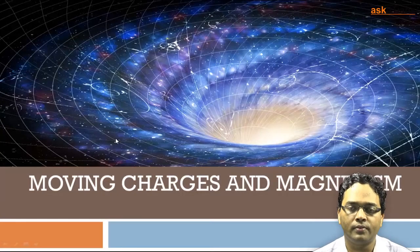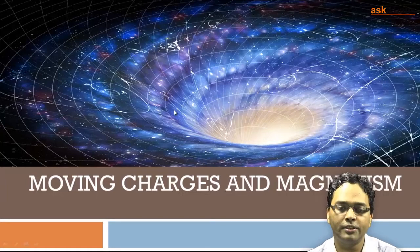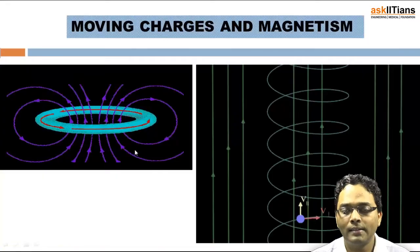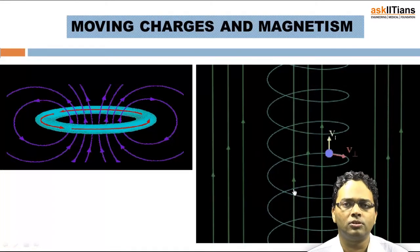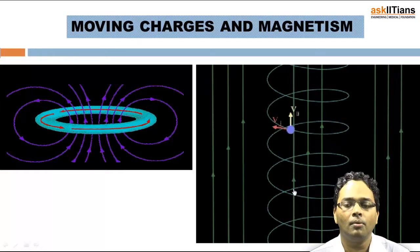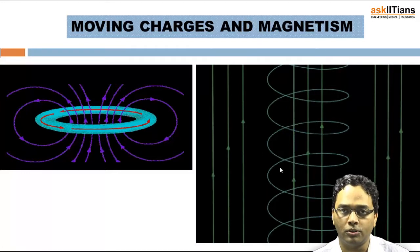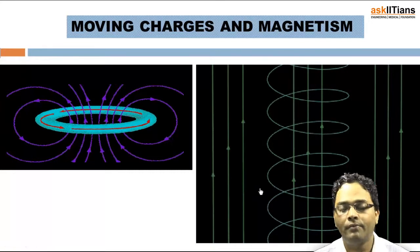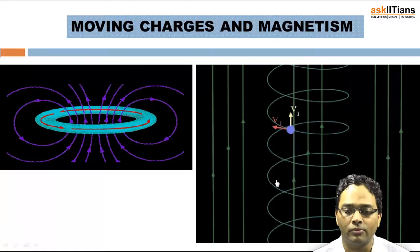Let's start off with moving charges and magnetism. When we talk about any particular charge, any charge is not going to be at rest, because charges do not have very high mass. All charges will continue to be in motion. Generally, when we talk about the motion of charges, that motion is going to be in a circular path.